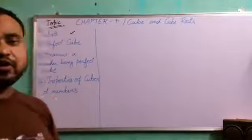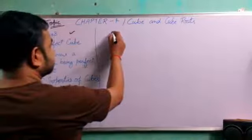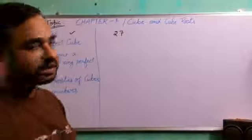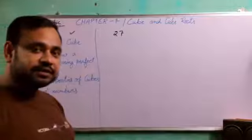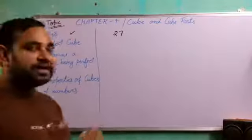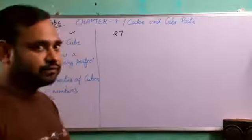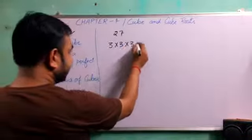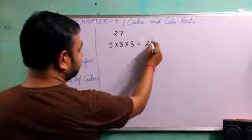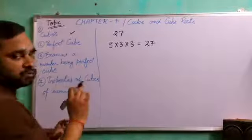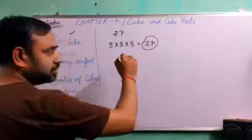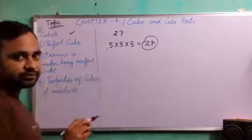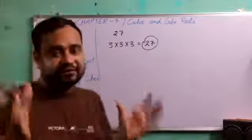Cubes are natural numbers. 27, I have written a number and it is a cube because it is found after multiplying a number 3 times by itself. Generally we can say that if a number is multiplied by itself 3 times, then what result we get, that is called a perfect cube.